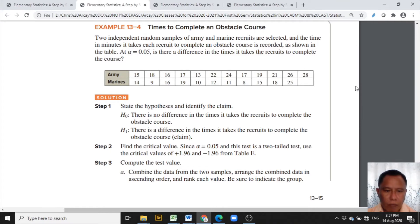Now it's time to encode the two groups of data in Excel template. The data coming from the Marines will be encoded first because it has the smaller sample, and then the Army data will follow. It's better to encode first the data with a smaller sample so that we can easily copy their data ranks in column D.